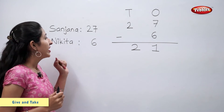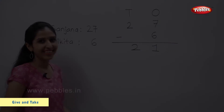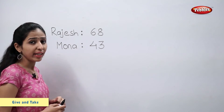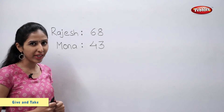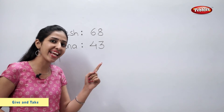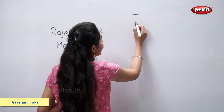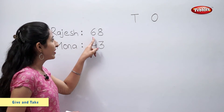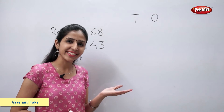So we can say that Sanjana is now left with 21 pearls. Let's look at this example. Rajesh had 68 pearls. He gave 43 pearls to Mona. Now let's find out the number of pearls left with Rajesh using 10s and 1s. 68 means 6 tens and 8 ones.